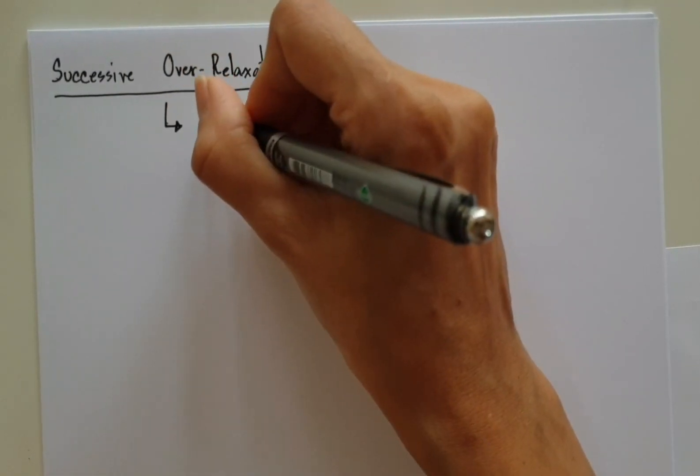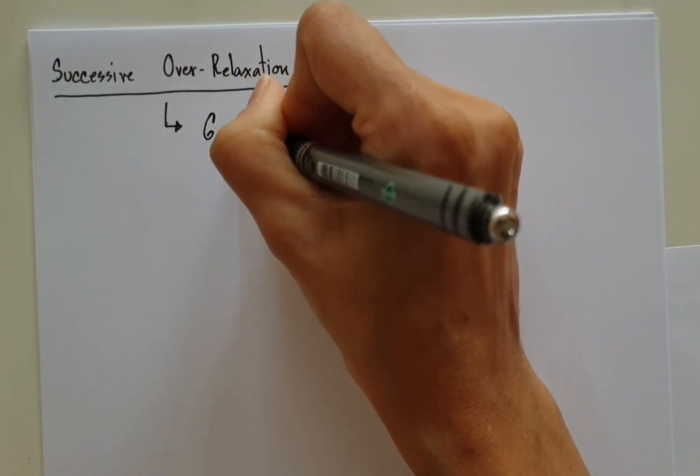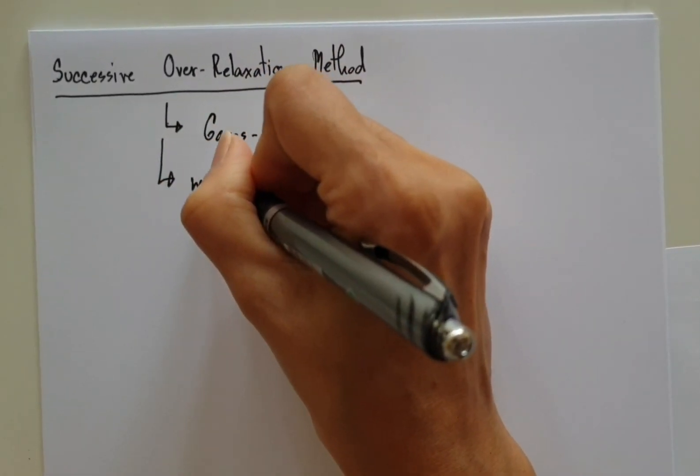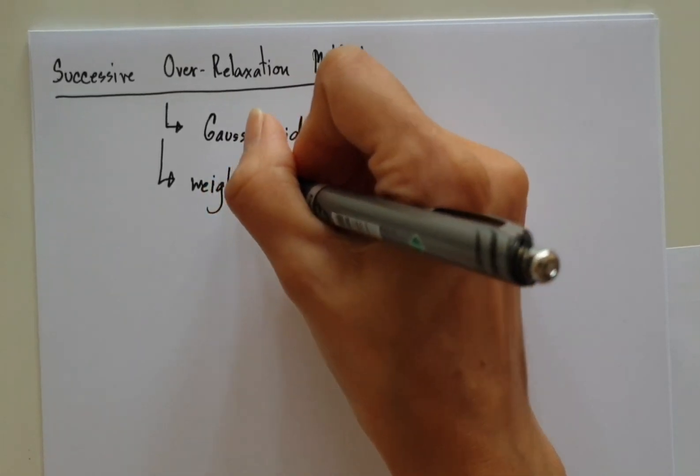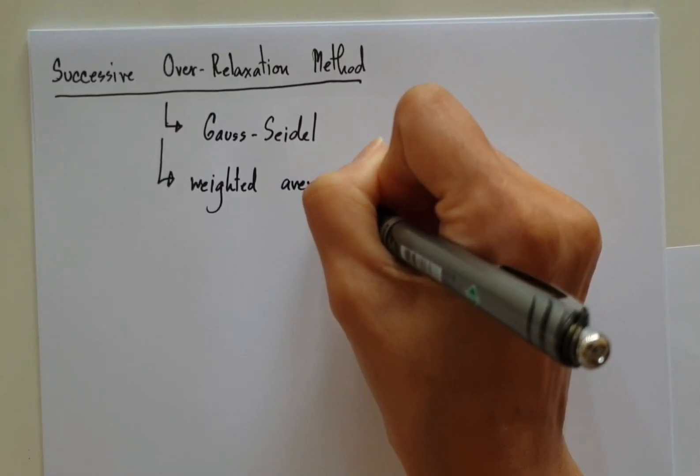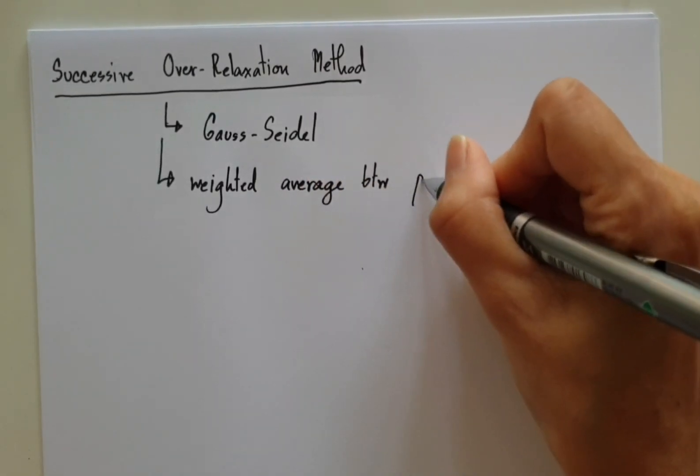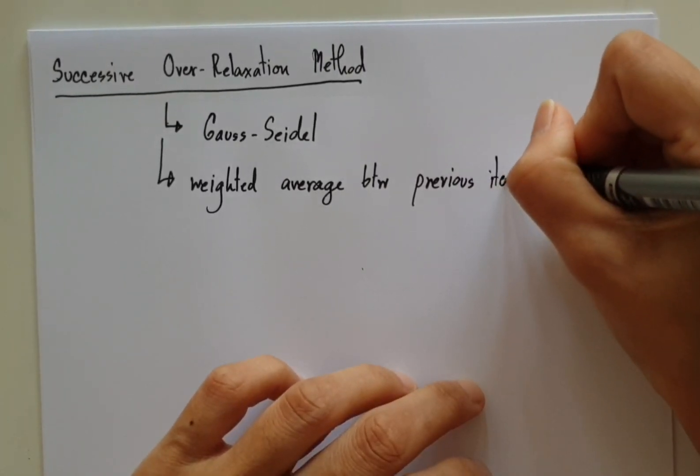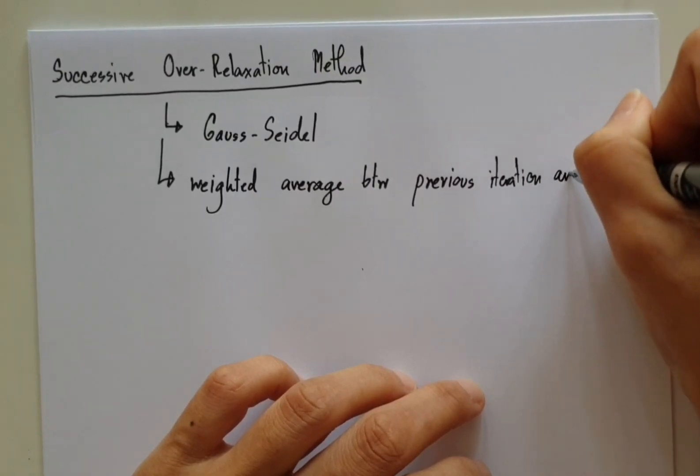The last technique that we will learn for solving system of equations is successive over-relaxation. It is actually based on Gauss-Seidel and it tries to do a weighted average between the previous iteration and Gauss-Seidel.